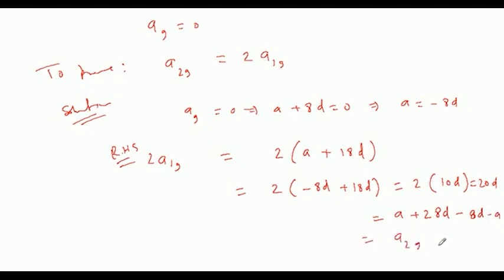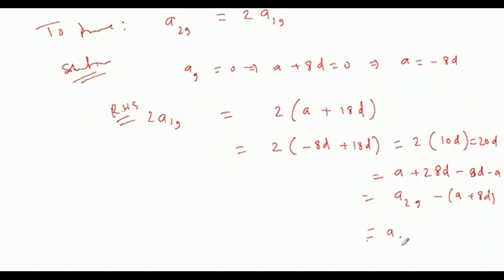देखो यहां पर, minus common करेंगे तो A plus 8D हो जाएगा, यह तो 0 ही है. तो ये A₂₉ minus 0, यानी A₂₉ ही आएगा.